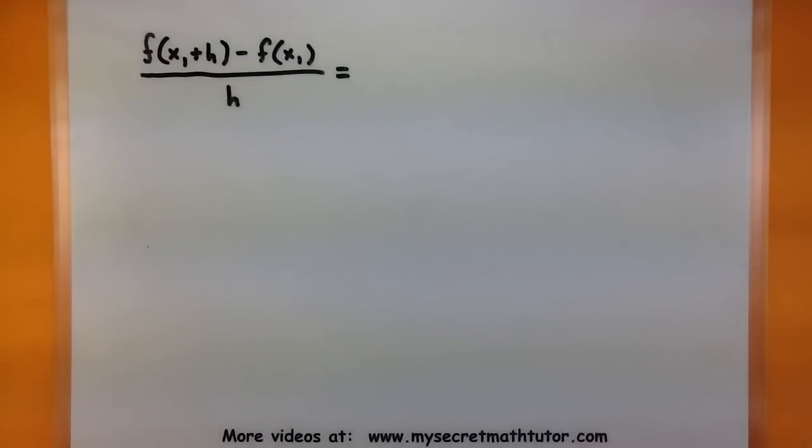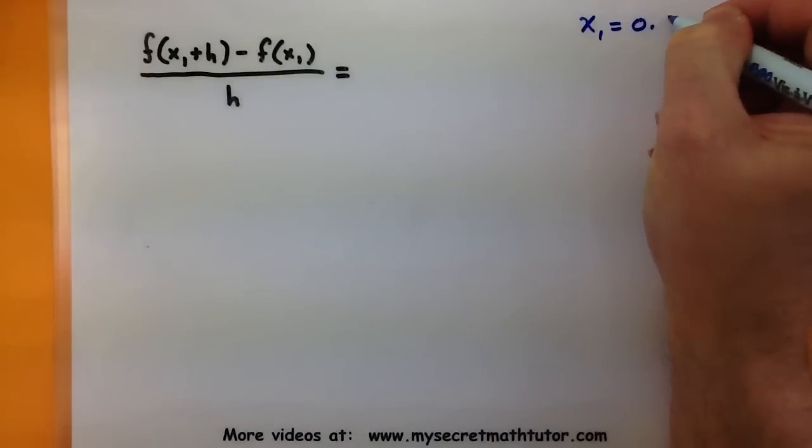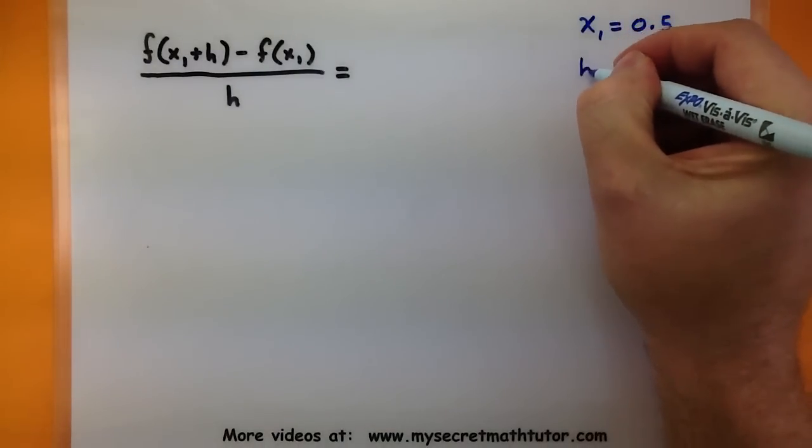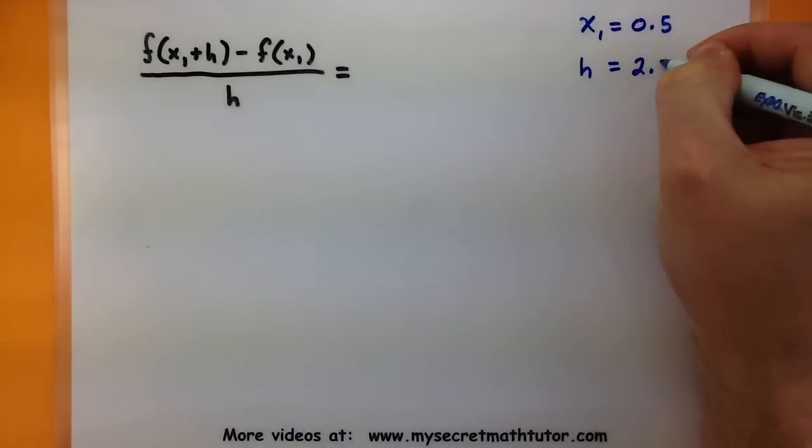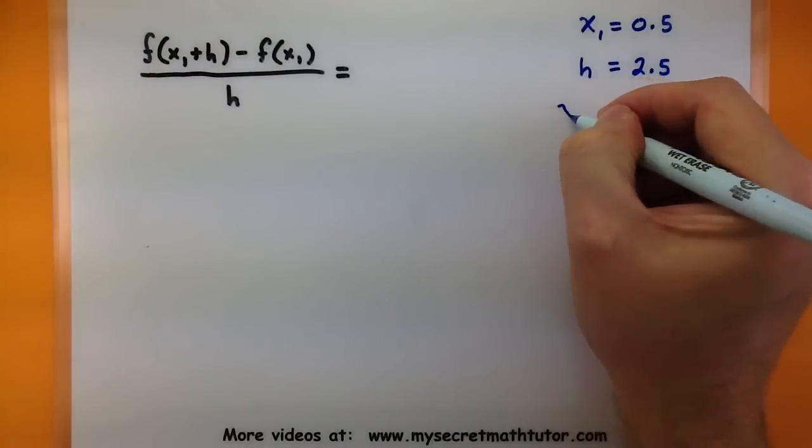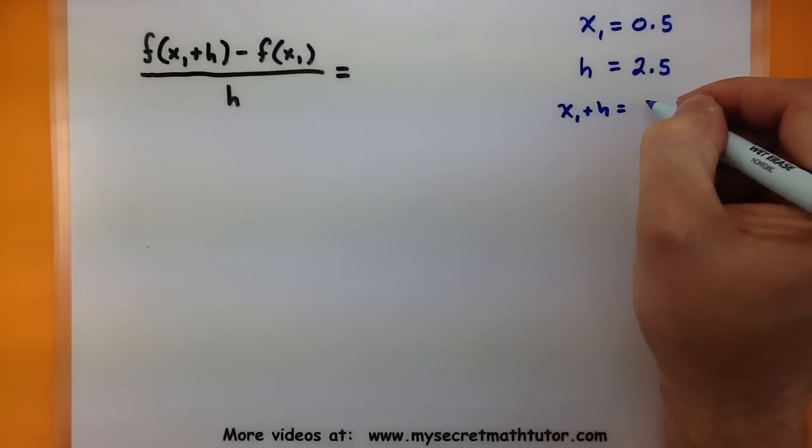First we have to figure out what is our first recorded time. Since it was first recorded at 30 minutes, I'm going to use x₁ = 0.5. Now I measured one time at 30 minutes and the other at 3 hours. So the difference between those two time measurements is 2.5 hours. That means my x₁ + h is essentially 3.